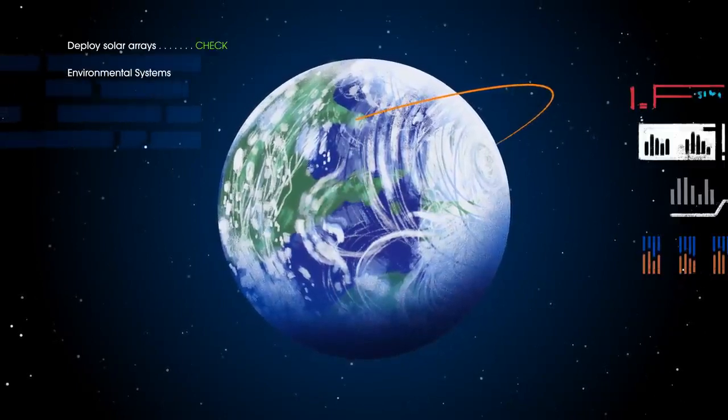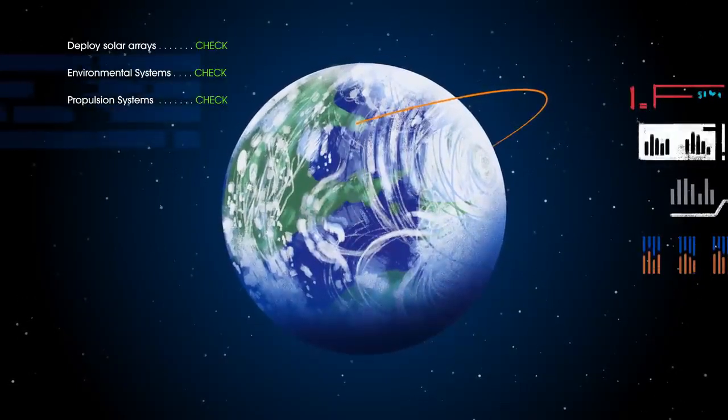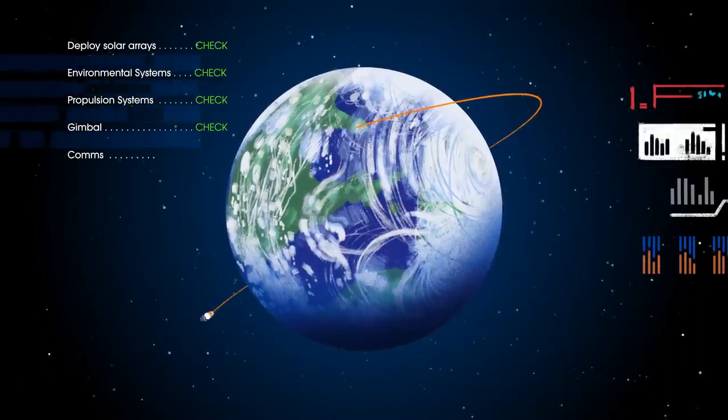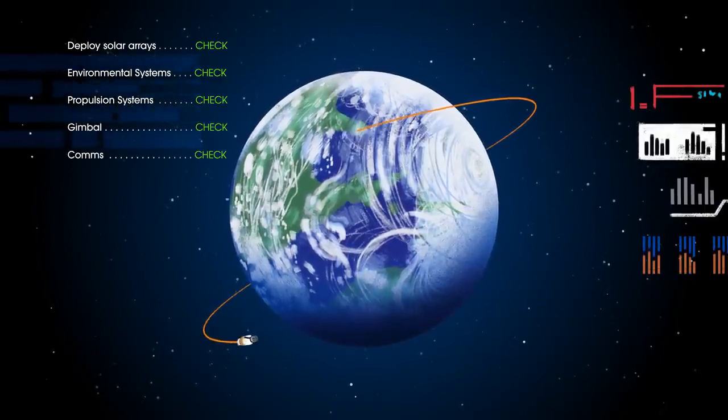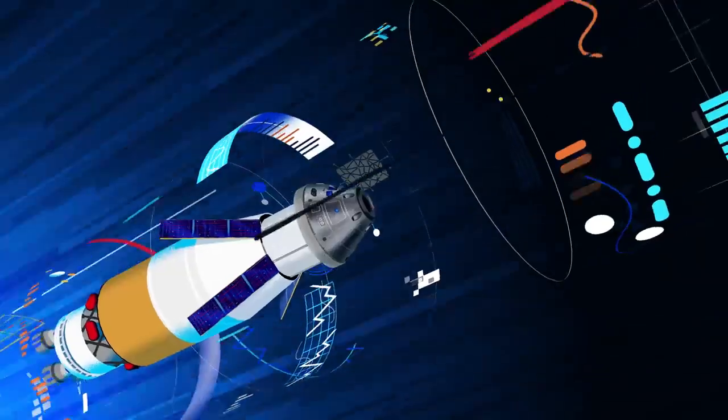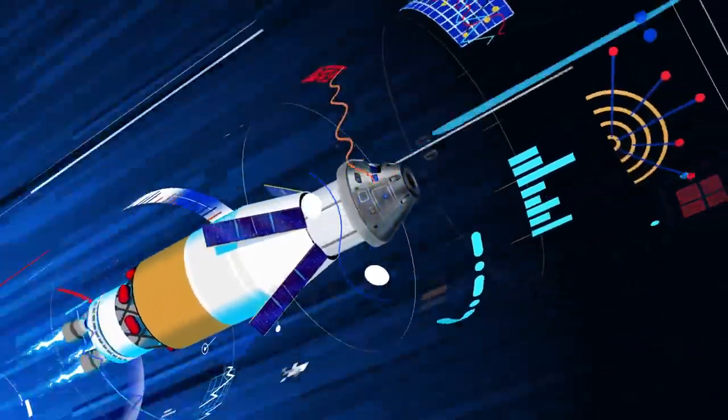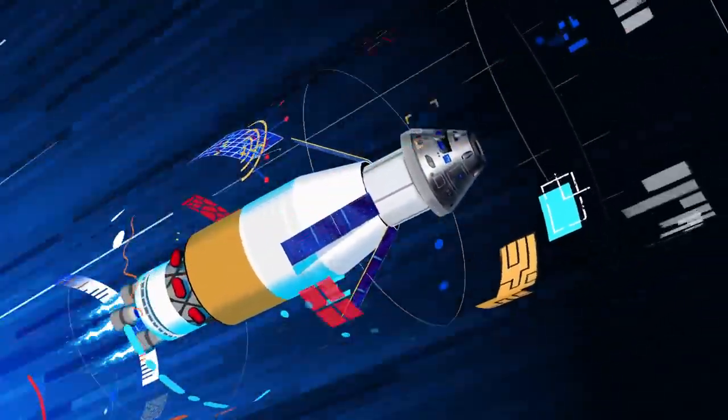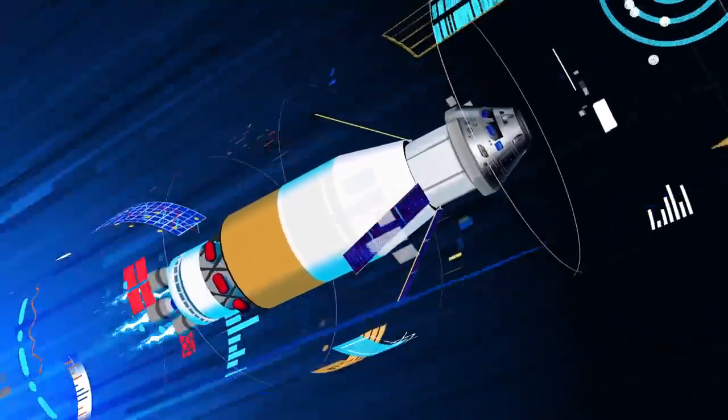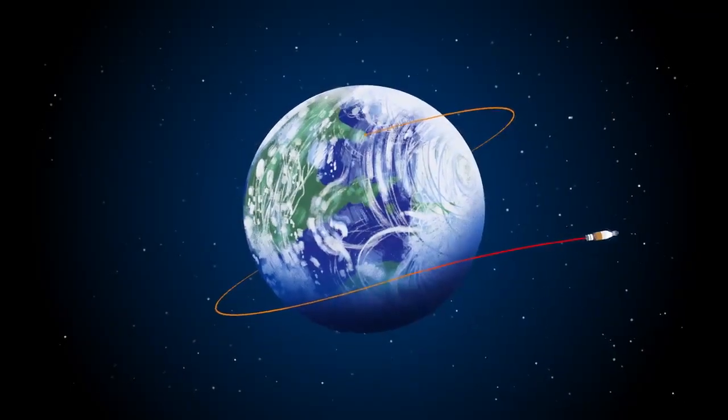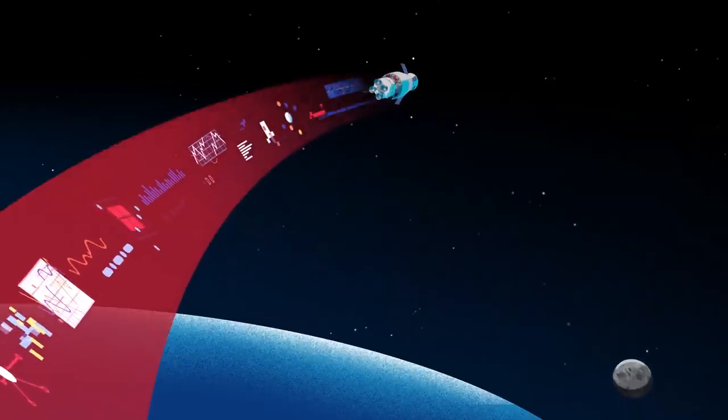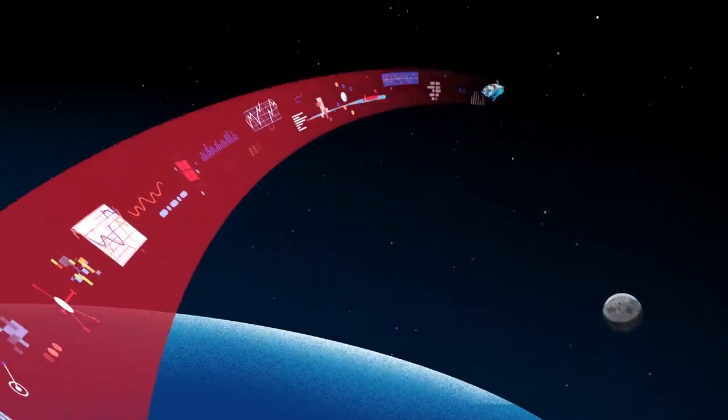Here, the crew reconfigure the spacecraft and check systems to confirm everything is ready for deep space travel. With a go from mission control, the crew reignite the exploration upper stage engines to leave Earth entirely. The exact timing of this maneuver is critical to reach a speed that can escape Earth's gravitational pull, but also put Orion on a course that will intersect the Moon days later.